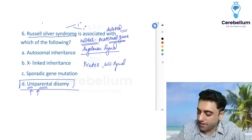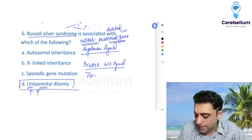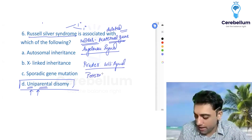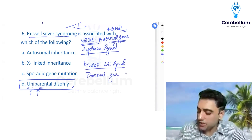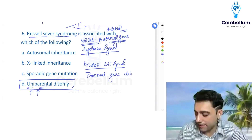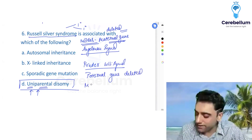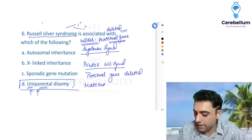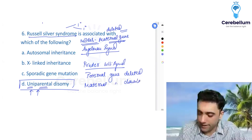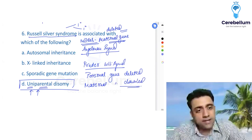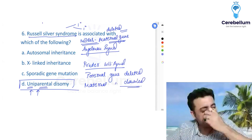In Prader-Willi syndrome, the paternal gene is deleted and the maternal gene is doubled. This is an important exam question: if asked to name three examples of uniparental disomy, remember these.